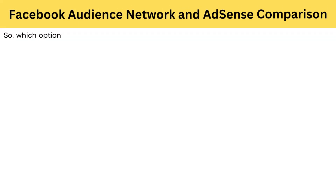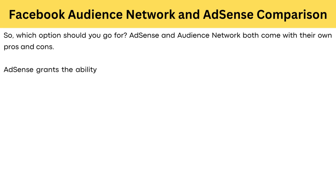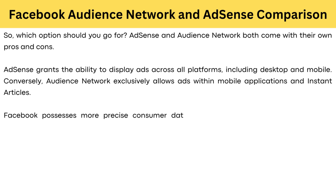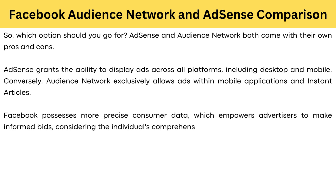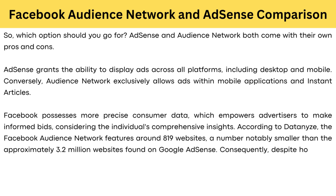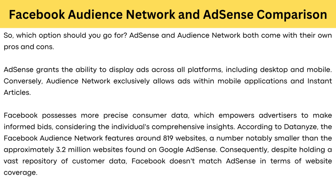So which option should you go for? AdSense and Audience Network both come with their pros and cons. AdSense grants the ability to display ads across all platforms, including desktops and mobile. Conversely, Audience Network exclusively allows ads within mobile applications and instant articles. Facebook possesses more precise consumer data, empowering advertisers to make informed bids. According to Datanyze, the Facebook Audience Network features about 890 websites, notably smaller than the approximately 3.2 million websites found on Google AdSense. Consequently, despite holding a vast repository of customer data, Facebook doesn't match AdSense in terms of website coverage.